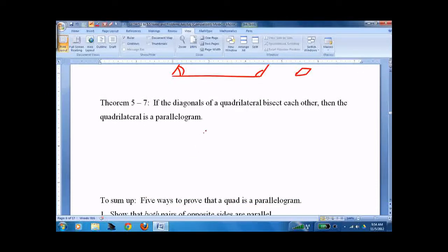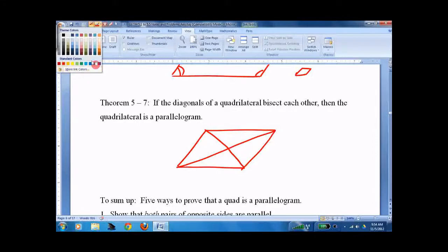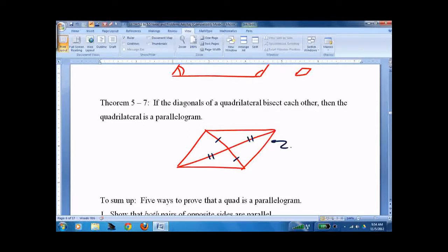And fourth. Not quite the final one. Diagonals bisect. We have a parallelogram. So that's four of them.